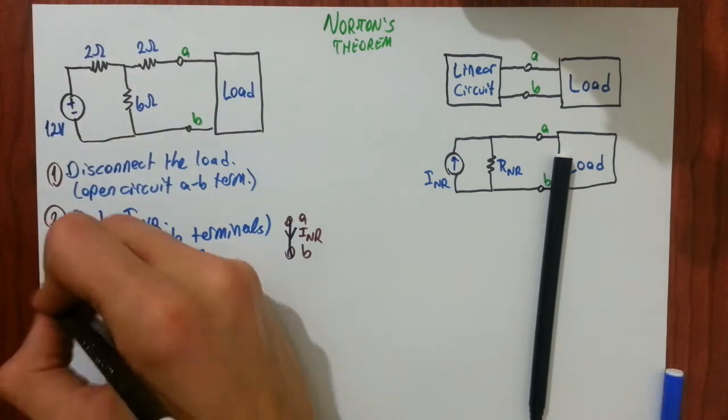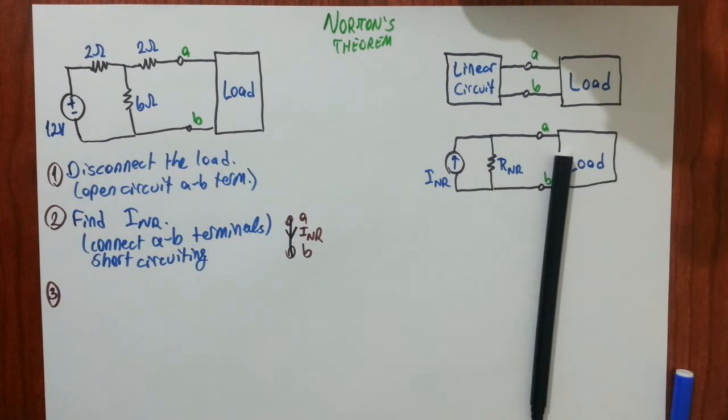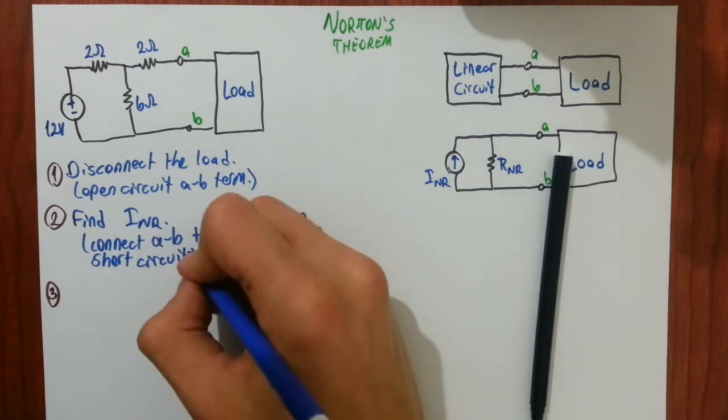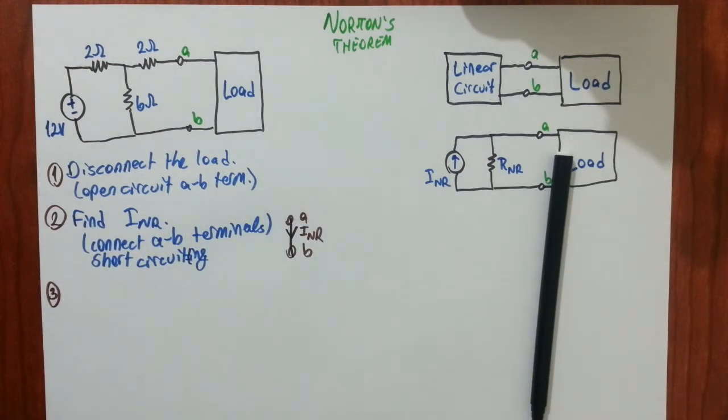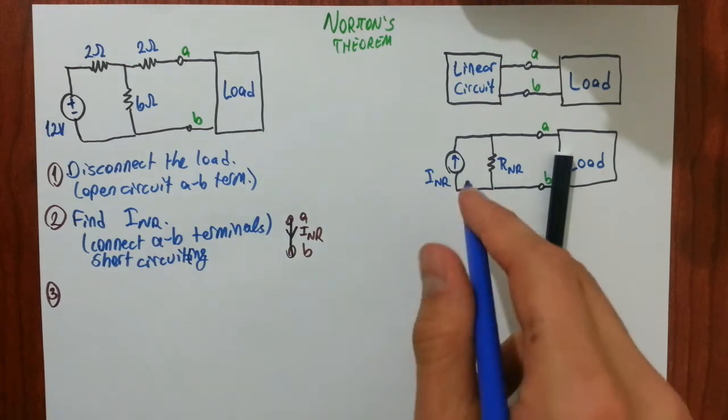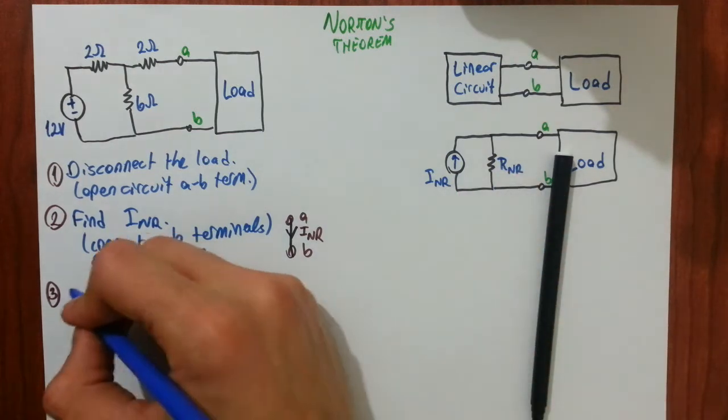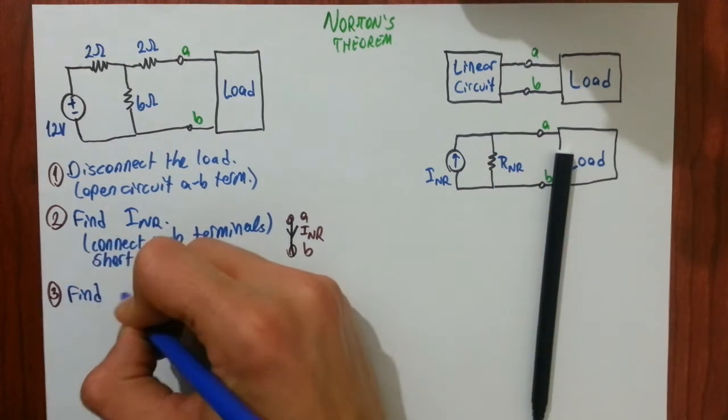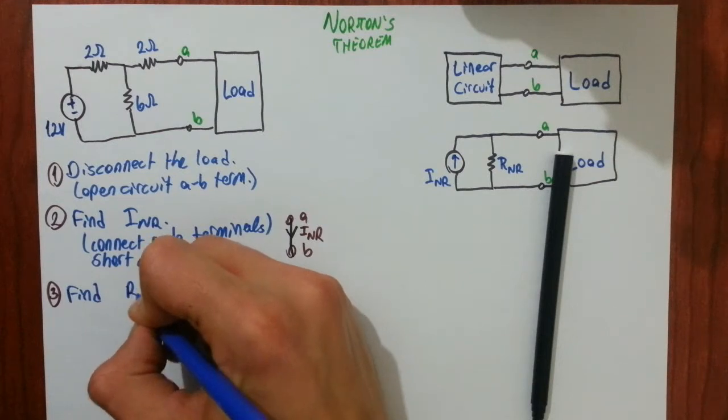Third step is to find Norton equivalence resistance. Find RNR.